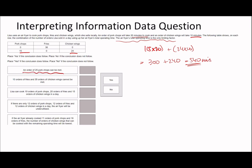An order of 25 pork chops can be met. So 25 times 20 is 500 minutes, and you definitely have the time to do that with 540 minutes available. This question basically hinges around figuring out the total amount of time - you either get it or you don't.